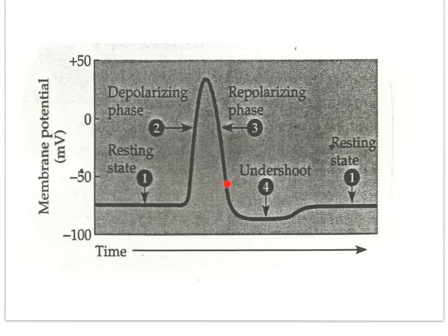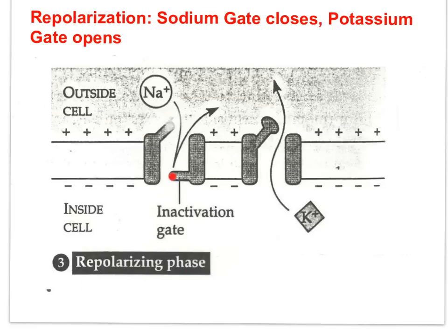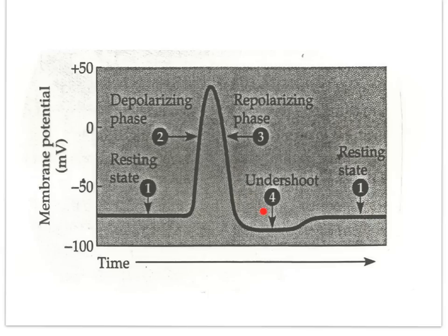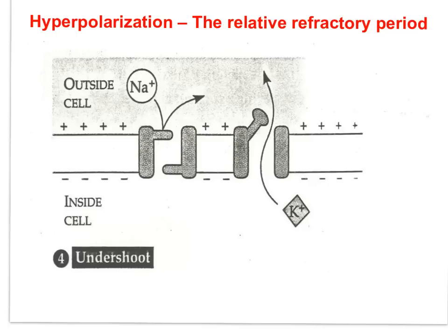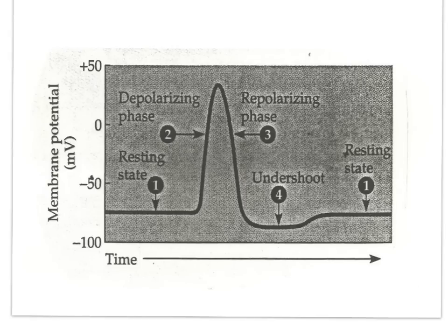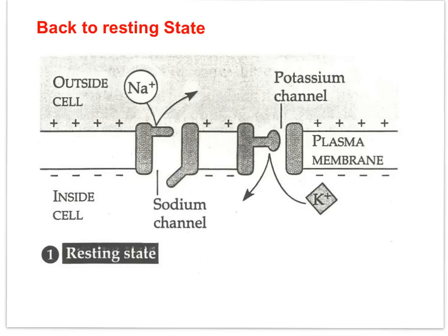Number three: the membrane repolarizes. The sodium gates close and the potassium gates open. Potassium diffuses out of the neuron and the membrane potential returns toward resting potential. Number four: the diffusion of potassium out of the neuron causes a brief hyperpolarization. The potassium gates remain open a little longer as they are slow to close. As they close, the sodium-potassium pump actively moves ions to reestablish resting potential, and both voltage-regulated gates return to their closed state.